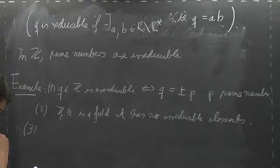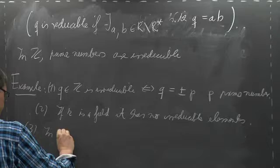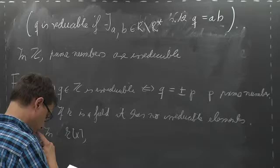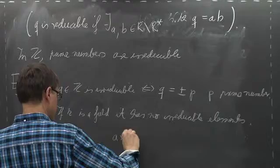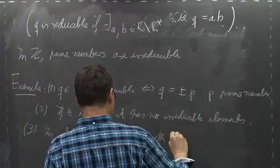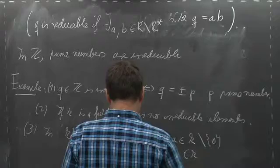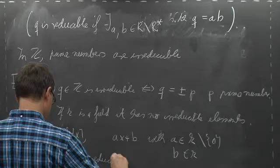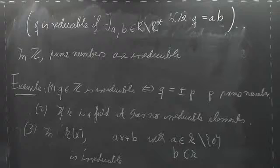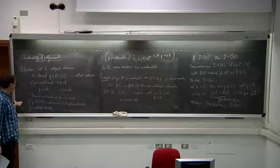In K[x]: I claim that ax plus b, with a a nonzero element of K and b any element of K, is irreducible. This polynomial is not a unit and not zero. If ax plus b equals F times G for polynomials F and G, then the degree of ax plus b equals the degree of F plus the degree of G.